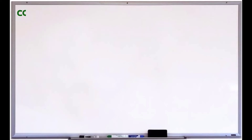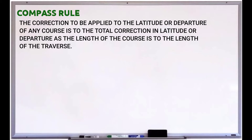Compass rule: the correction to be applied to the latitude or departure of any course is to the total correction in latitude or departure as the length of the course is to the total length of the traverse.